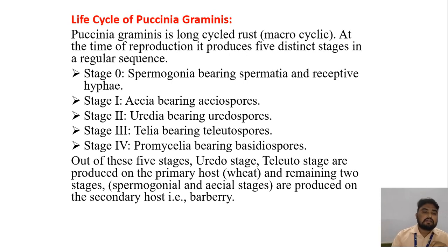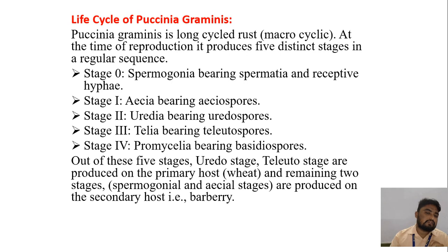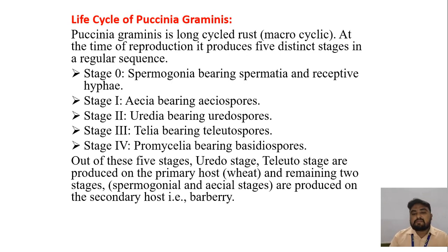The mycelium is well developed, branched, septate and does not spread throughout the host but is localized to isolated patches. The life cycle of Puccinia graminis is a long cycle rust. At the time of reproduction it produces five distinct stages in regular sequence. Stage 0: Spermogonia bearing spermatia on receptive hyphae.